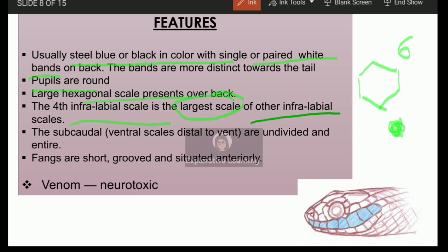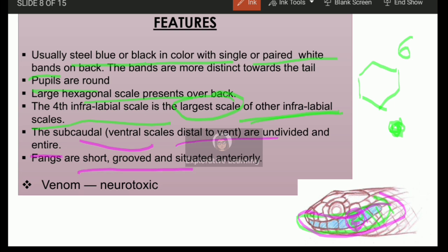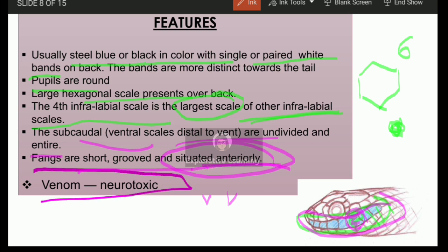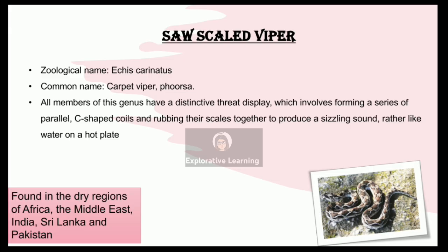The fourth infralabial scale is the largest, and the other labial scales are smaller compared to the fourth labial scale. In case of common krait, subcaudal ventral scales are undivided and entire. Fangs are somewhat short and situated anteriorly — in most poisonous snakes the fangs are quite short and located anteriorly. The venom is neurotoxic, though in some cases a myotoxic venom can also be present.